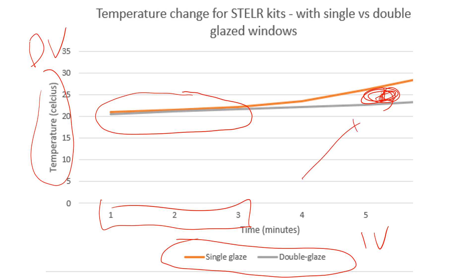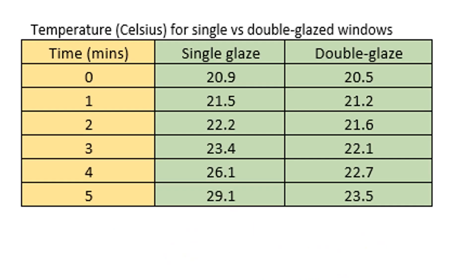What we want to draw our reader's attention to is the fact that after about three or four minutes, the double glazed windows are more effectively insulating than the single glazed windows. Now let's take the analysis a bit further by referring to our raw data that would be presented in a table. Rather than just pointing out that there's a big difference between the final temperature of our two variations, let's get a little bit maths-y. So if we look at our double glaze final temperature — 23.5 —